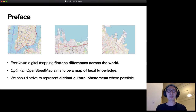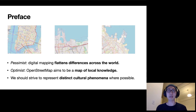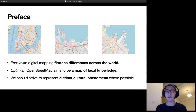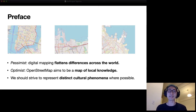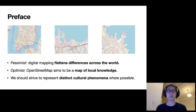A pessimistic view of OSM and mapping in general is that it flattens differences across the world. That means you could go to places as diverse as New York City or somewhere in Indonesia and the map looks pretty much the same. On the other hand, we know the world is a really diverse place, so we should strive to represent distinct cultural phenomena if possible.